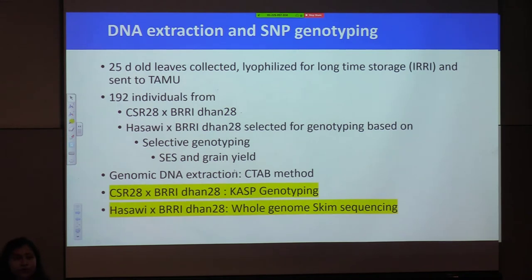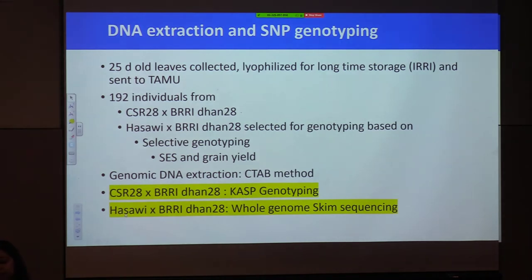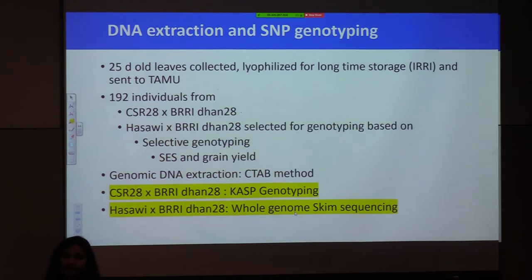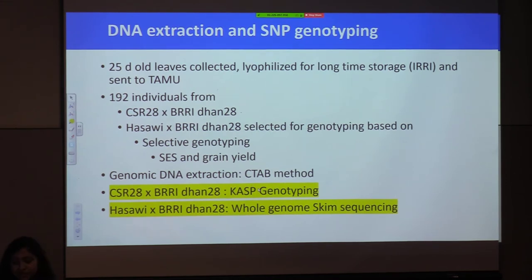DNA extraction was done using the CTAB method. For the two populations we used two different platforms to identify SNPs. For CSR 28 × BRRI Dhan 28 we used KSP genotyping; for Hassawi × BRRI Dhan 28 we used shotgun sequencing. When we transported the leaf samples from IRRI to Texas A&M and finished DNA extraction, we found some DNA quality issues — the DNA was highly degraded. That's why we decided to use KSP genotyping for that population, while the Hassawi population DNA quality was acceptable for shotgun sequencing.